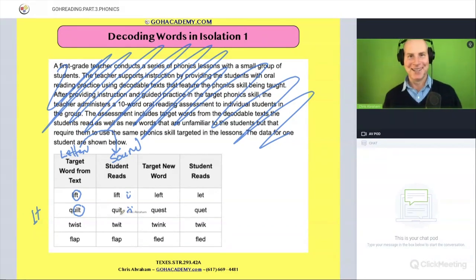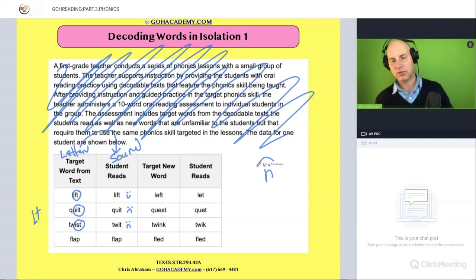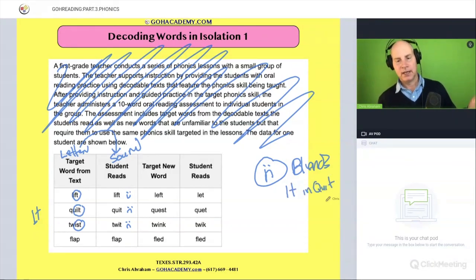50-50. Here's the word twist and they say twit. We got another blend wrong. So right now we have two blends. Here's the word flat and they say flat, they got it. How about left, and they say let. That is FT. They got it right here and they got it wrong here. So I guess I have to put it on the list.